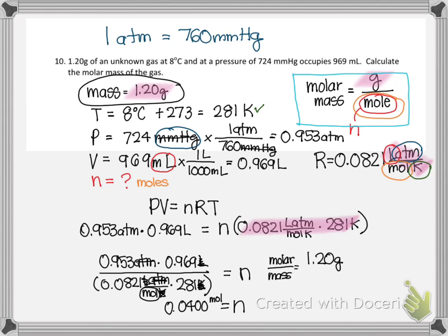So I have 1.20 grams. That was given, divided by the number of moles that this sample would have. You see, it's grams per mole, which is the molar mass. So let's do 1.20 divided by 0.0400. And I get to three significant figures, 30 grams per mole. And so that would be my answer.